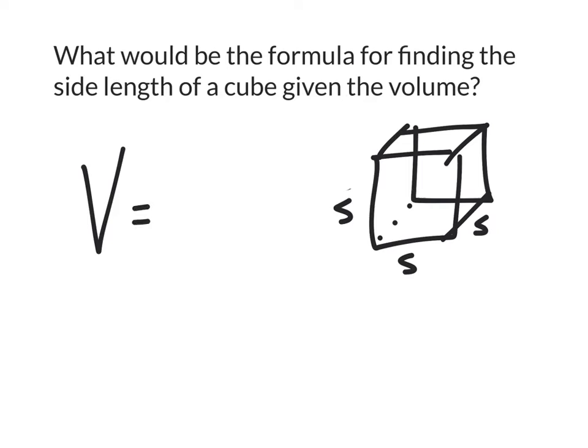So if you wanted the volume, that's not the question we're looking at, but if you did want it, you would take the side length and multiply it by itself three times. Now you could write this as the side length to the power of three.